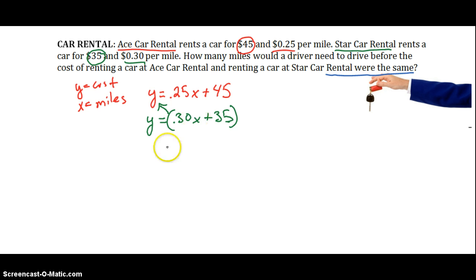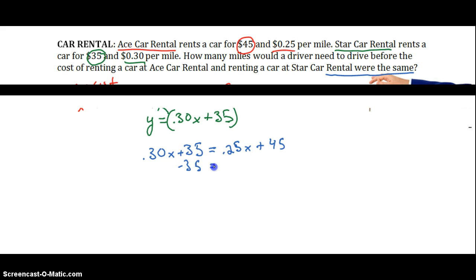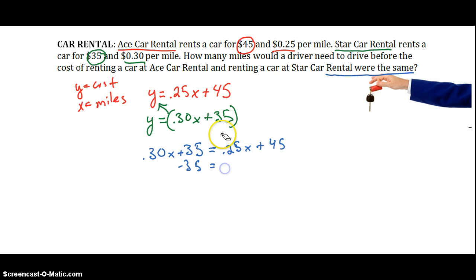All right, so let's take a look at doing that. We're just going to use substitution. So we've got 0.30x plus 35 equals 0.25x plus 45. Now we're going to subtract 35 from each side. We'll be left with 0.30x equals 0.25x plus 10.